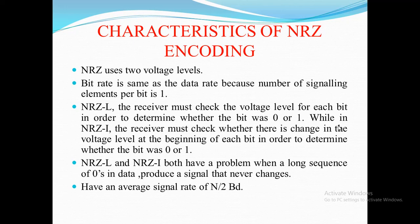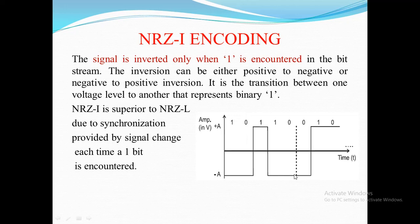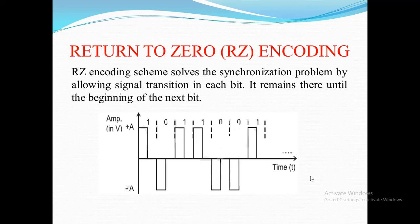Key characteristics of NRZ encoding: it uses two voltage levels (positive and negative), bit rate is the same as the data rate because the number of signaling elements per bit is 1, and the value stays constant over the full bit interval. The problem with NRZ is that when there is a long sequence of zeros, it produces a signal that never changes, and the receiver cannot determine where one bit ends and the next bit begins - this is the synchronization problem.